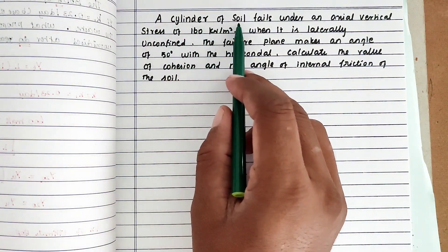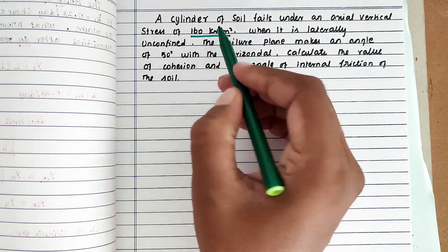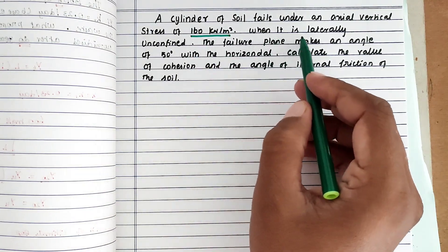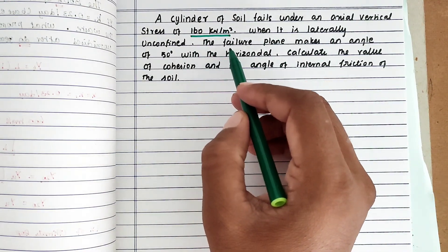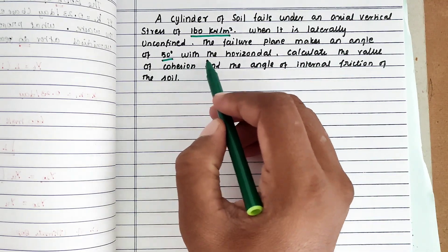The problem is: a cylinder of soil fails under an axial vertical stress of 160 kN per meter square when it is laterally unconfined. The failure plane makes an angle of 50 degrees with the horizontal.